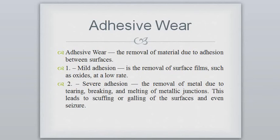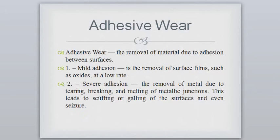Next is adhesive wear. Adhesive wear is a removal of material due to adhesion between the surfaces. There are two types. First, mild adhesion and severe adhesion. Mild adhesion is a removal of surface film such as oxide at a low rate. Severe adhesion is a removal of metal due to tearing, breaking, and melting of metallic junctions. This leads to scuffing and galling of the surface and even seizure.